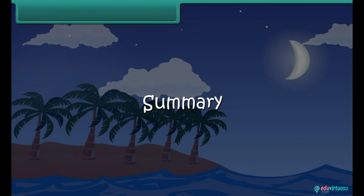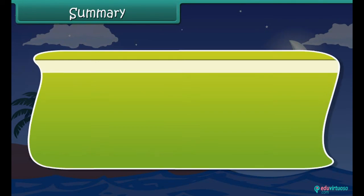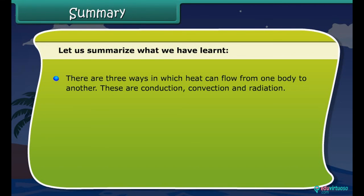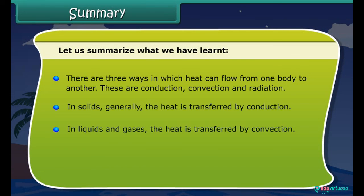Summary: Let us summarize what we have learned. There are three ways in which heat can flow from one body to another. These are conduction, convection and radiation. In solids, generally the heat is transferred by conduction. In liquids and gases, the heat is transferred by convection. No medium is required for transfer of heat by radiation.